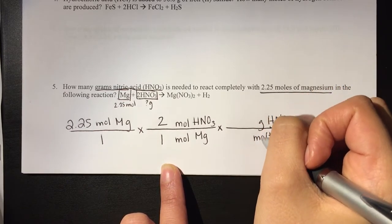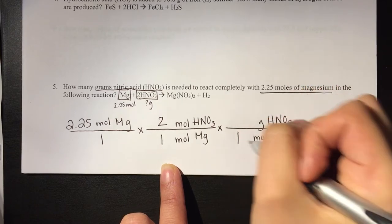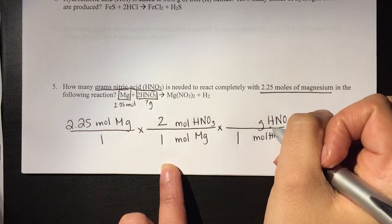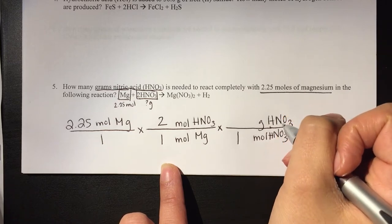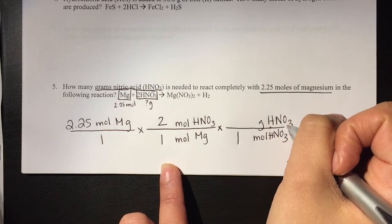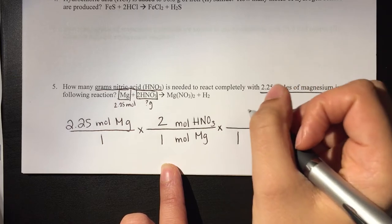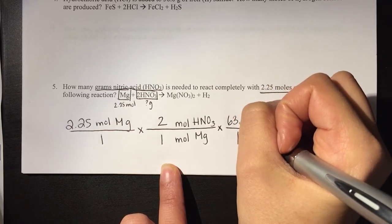So remember the conversion from moles to grams is 1 mole equals the atomic mass of whatever we're dealing with. So we have to take the mass of 1 hydrogen, 1 nitrogen, and 3 oxygens, add them together, and we would get 63.01.